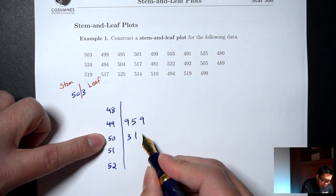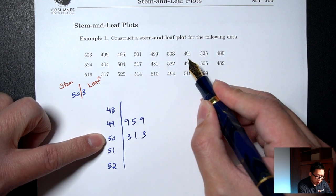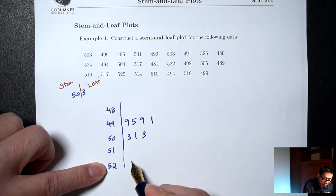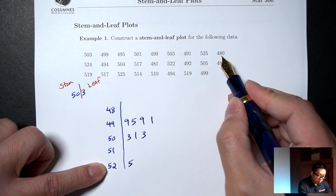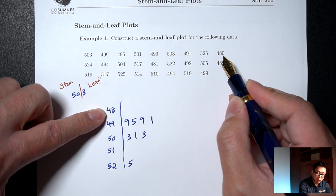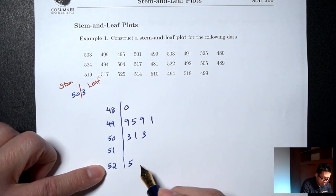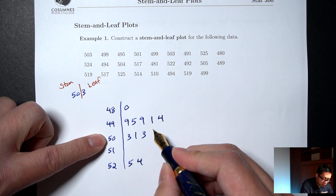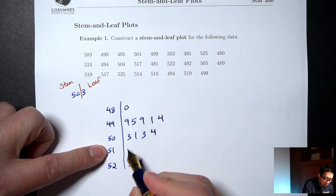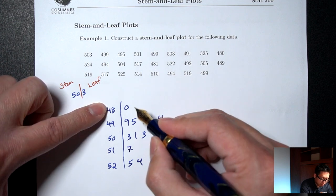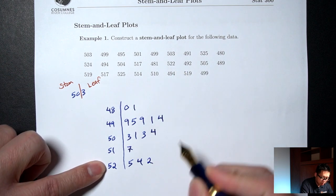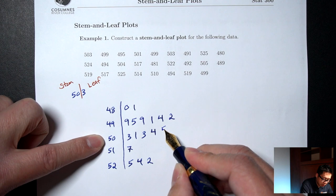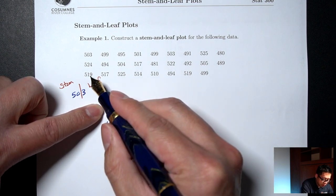503 goes with the 50 stem — just write the very last digit. 491 goes with the 49 stem. 525 goes with the 52 stem, and we just write the very last digit, 5. 480 goes with the 48 stem, and we write down the zero. Then continuing: 524, 494, 504 goes with the 50 stem, and 517 — just write the very last digit.